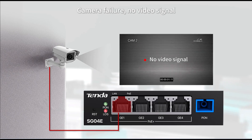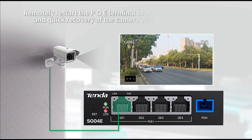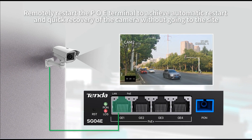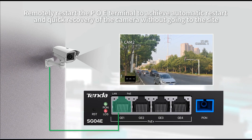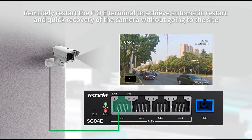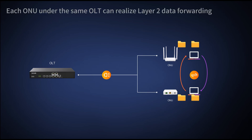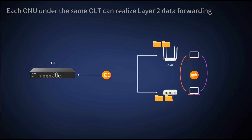When a camera fails and no video signal is output, you can remotely restart the POE terminal to achieve automatic restart and quick recovery of the camera, without needing to go to the site. Highlight 2: each ONU under the same OLT can realize layer 2 data forwarding.